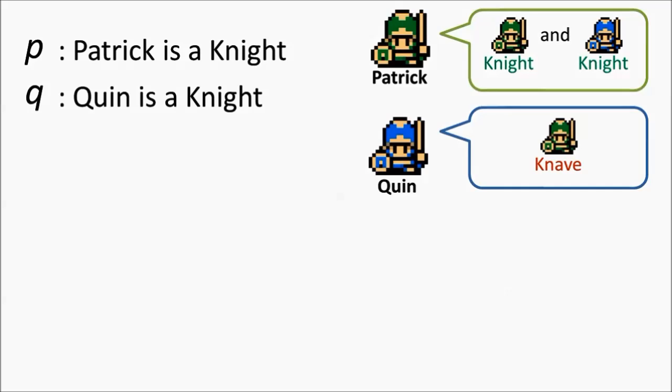Next, we will write out statements each Islander makes in logical form. Patrick says we are both Knights. In other words, he's claiming P and Q. Both P and Q are true. Quinn says Patrick is a Knave. In other words, he is negating P. So we will write not P.